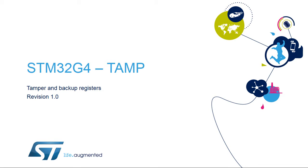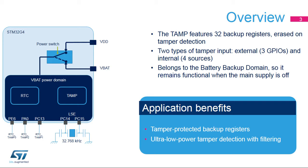Hello and welcome to this presentation of the STM32 tamper and backup registers. It covers the main features of this peripheral, which is used to provide security against tamper events. The TAMP peripheral features 32 32-bit backup registers used to preserve data when the main supply is off. These backup registers can be used to store secure data, as they are erased when a tamper event is detected on the tamper pins or on some internal events.